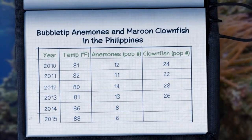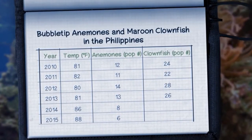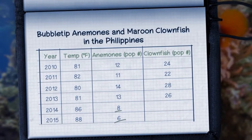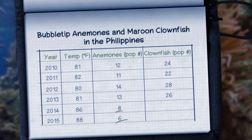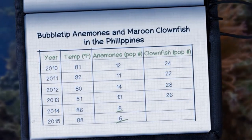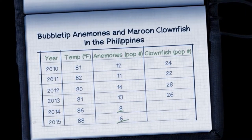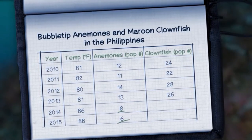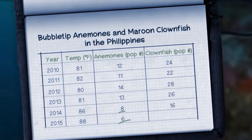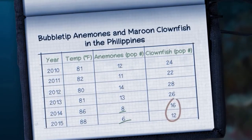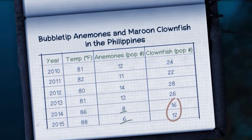Given what you know about this mutualistic relationship, can you predict the effect this drop in bubble-tip anemones will have on maroon clownfish populations? Pause the video and make your prediction. In this example, extreme temperatures led to a decrease in anemones, and given what we learned about the population ratio, we can predict a similar drop in maroon clownfishes.